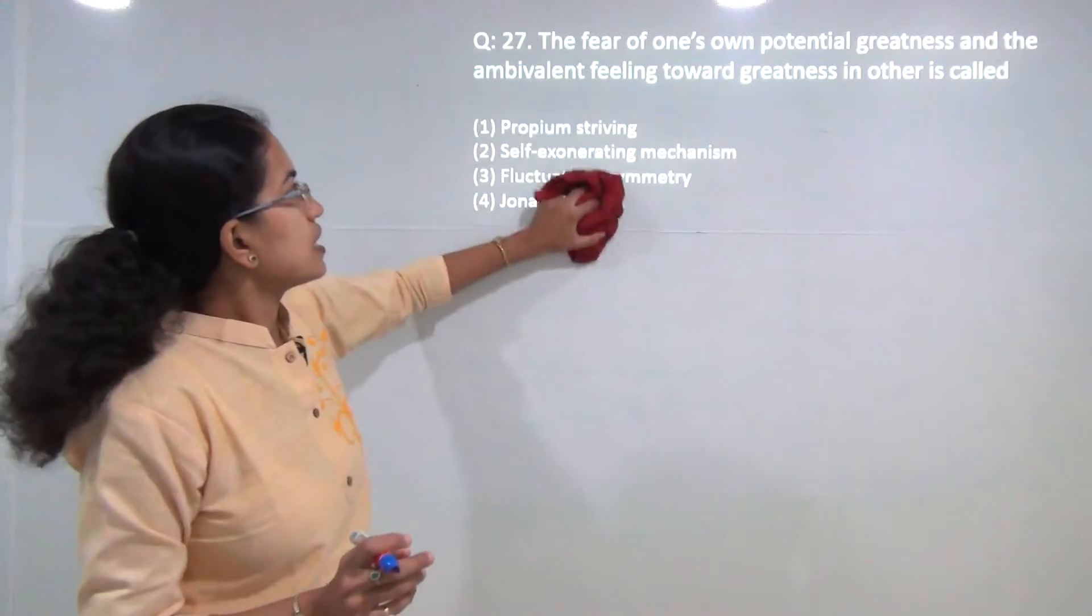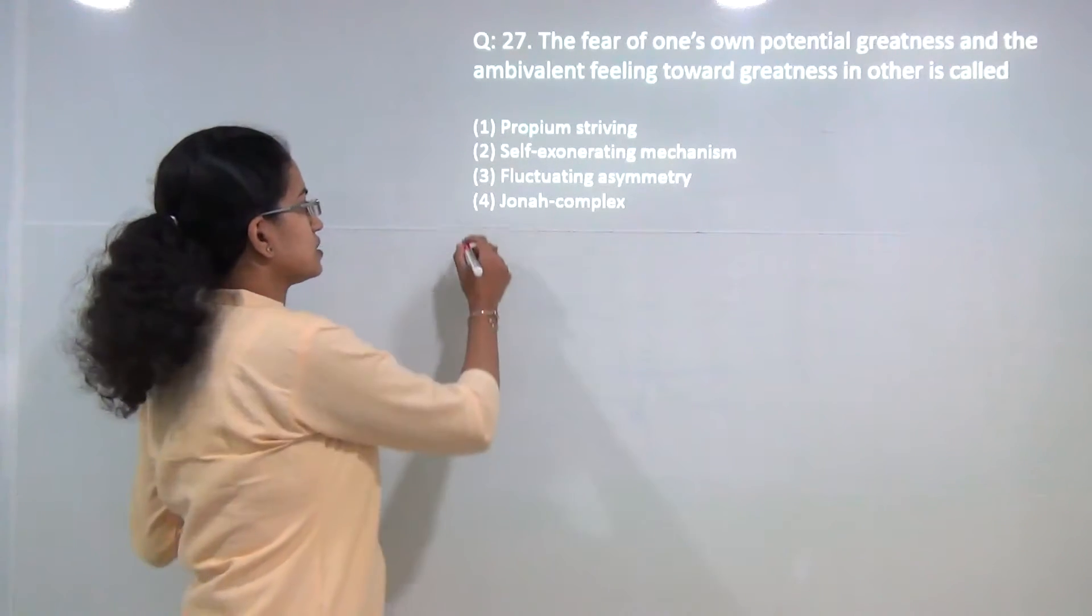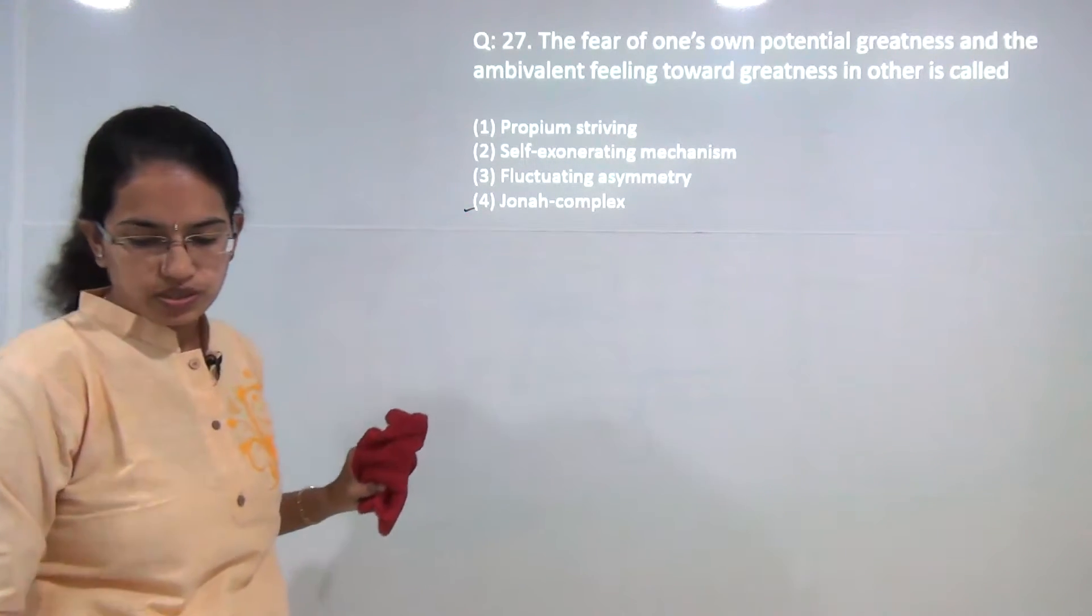Next question: the fear of one's own potential greatness and the ambivalent feeling towards greatness in others is known as Jonah complex. This is the direct definition for what is Jonah complex.